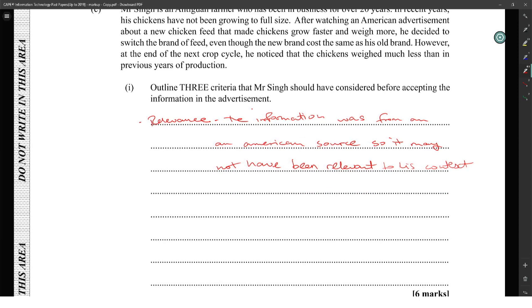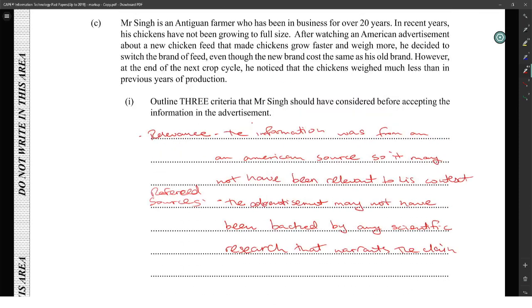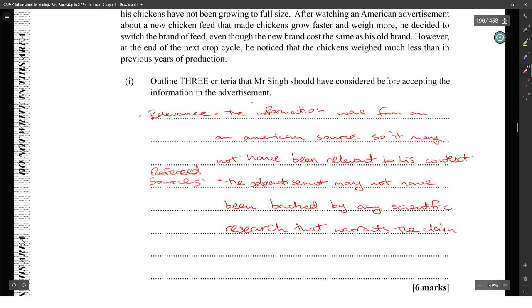He could have looked for level of scholarship. The advertisement may not have been by any authority that warrants the claim. I'll change it from level of scholarship to refereed sources, because it has to be backed up. And the next one would be level of scholarship of the persons who made the claim may not have a reputable reputation.